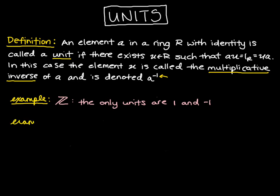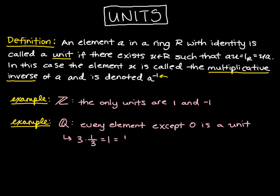Let's consider another ring. Here let's consider the set Q of rational numbers. Here every element except zero is a unit. So if we go back to our earlier thought of the number three, any element has its inverse which is namely its reciprocal. So three times one-third is equal to one, which is equal to one-third times three. So the inverse of a non-zero rational number is its reciprocal.